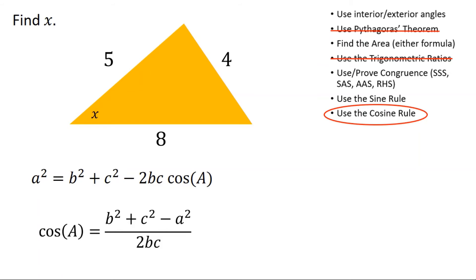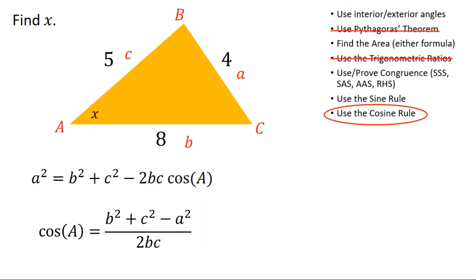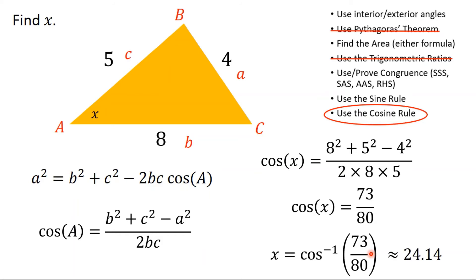I'm going to label my triangle. Because I'm using the cosine rule, I need A to be the angle I'm trying to find, then the other two angles can go anywhere, and the side lengths are labelled opposite their partner. Substituting in: cos x = (8² + 5² − 4²) / (2 × 8 × 5), which gives 73/80. Then to find x I take the inverse cosine to get 24.14 degrees. The bit I want you to focus on today is the choosing of which rule to use.